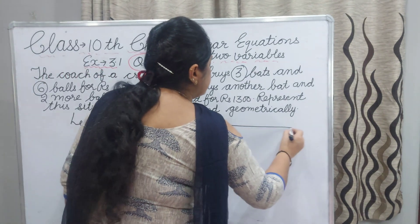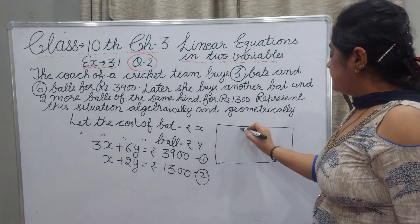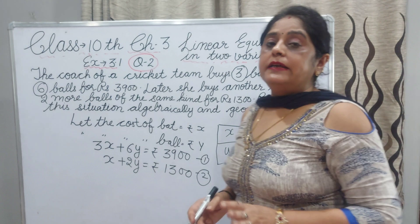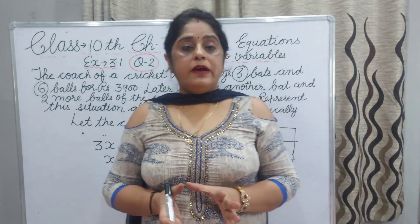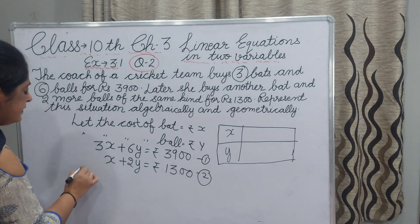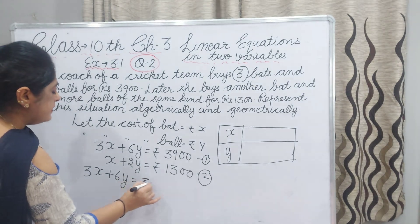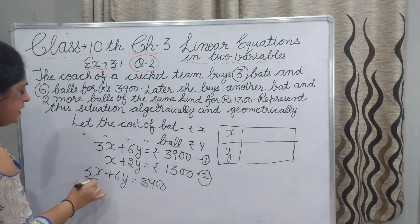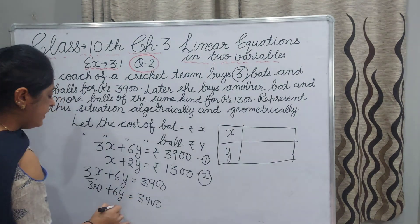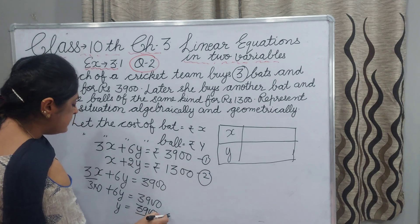For the first equation, I am making a table of X and Y values. Keep in mind: take X as 0 one time and Y as 0 another time to get a neat and clean graph. In equation 3X plus 6Y equals 3,900, if I put X equal to 0, then 6Y equals 3,900, so Y equals 3,900 divided by 6, which gives 650.